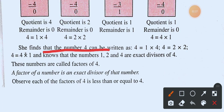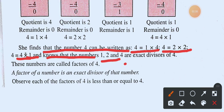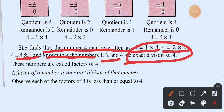We find that four can be written as: 4 = 1 × 4, 4 = 2 × 2. The numbers where the remainder is zero — that is, one, two, and four — are the exact divisors of four. These numbers are called the factors of four.